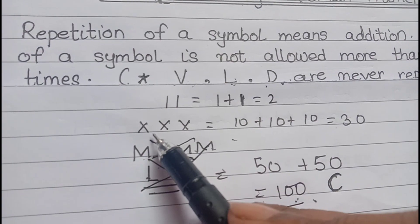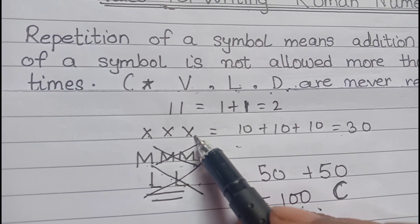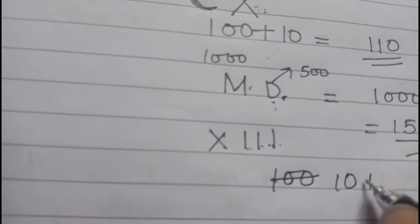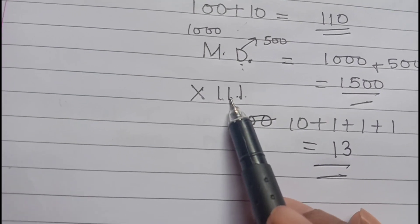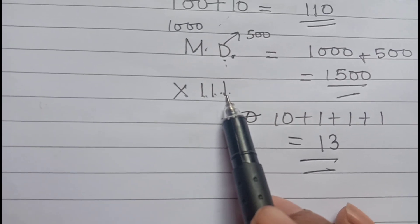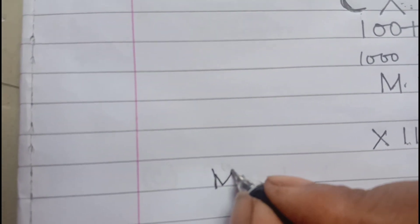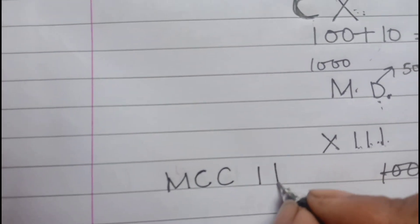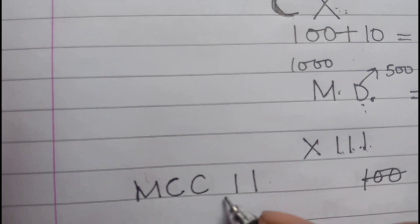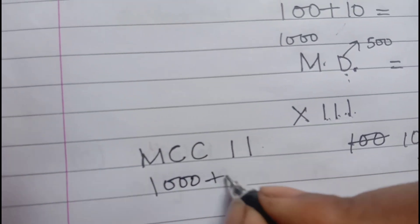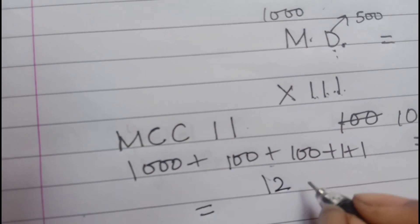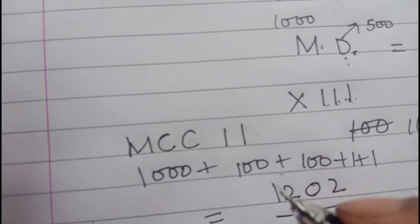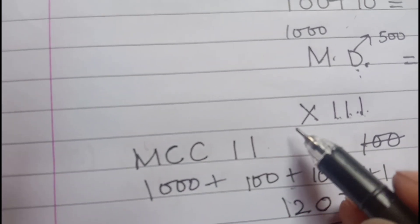So we never repeat a symbol more than three times, and we can repeat a symbol up to three times to show addition. For example, XIII is 10+1+1+1=13. Another example: MCCCI — that is 1000+100+100+100+1+1 = 1202. We can add as many symbols as needed on the right side.